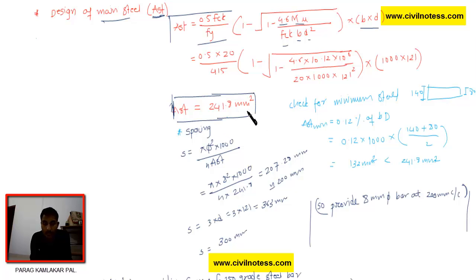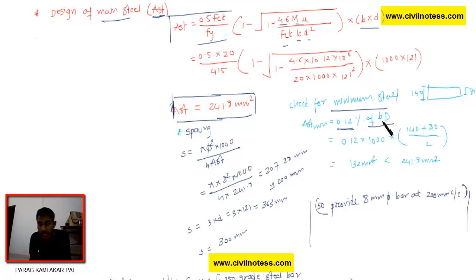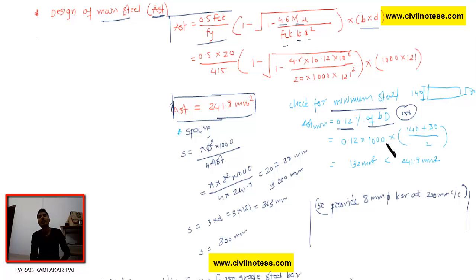After getting the AST, you have to compare it with the minimum steel check. The minimum steel is 0.12% of B × D, as specified by IS 456.